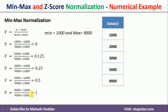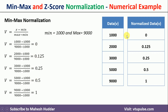In the fifth iteration, I put 9000 and get 1.0. Since 9000 is the maximum, I get 1, and since 1000 is the minimum, I got 0. All remaining values are in the range of zero to one. The corresponding normalized values for each of these data points are shown here.